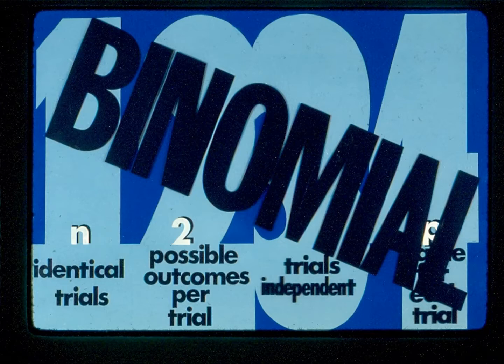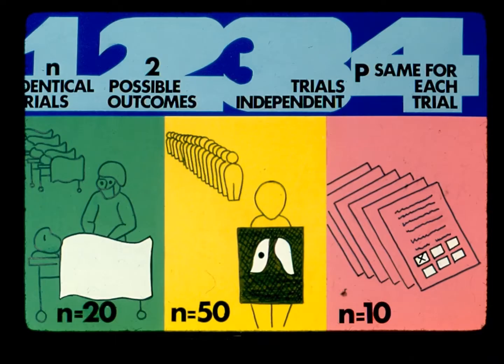When all four properties are satisfied, we can say that the general form of the distribution is binomial. We can confirm that many other discrete random variables are binomial by checking these four properties — for example, the number of successful operations out of 20, the number of people out of a sample of 50 who develop lung cancer, and the number of people in a sample of 10 favoring a particular political candidate.